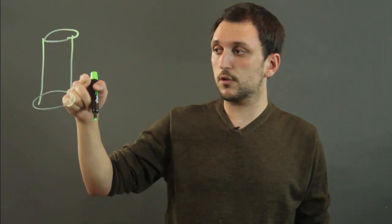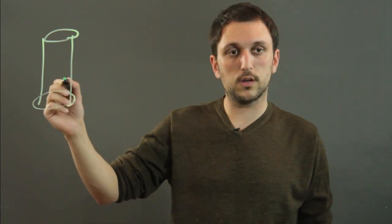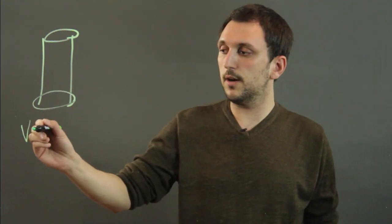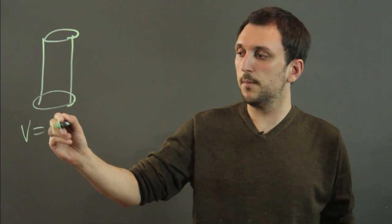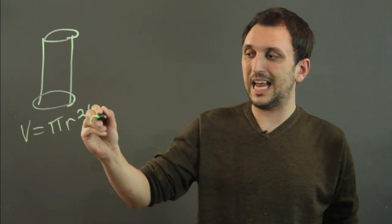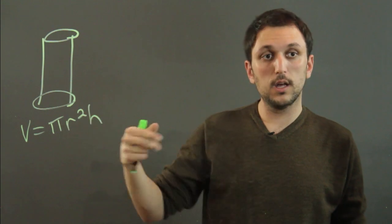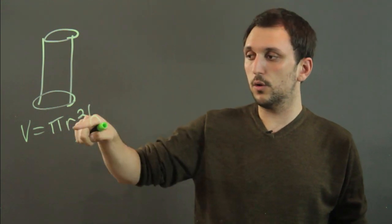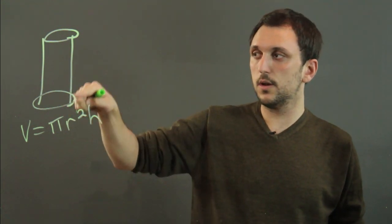Now, the cross section can be a circle if you're taking a horizontal cross section. For example, the volume of a cylinder is pi r squared h, and if you think about it, pi r squared is the area of a circle, so you're just multiplying the area of a circle times the height.